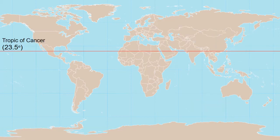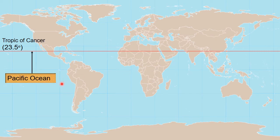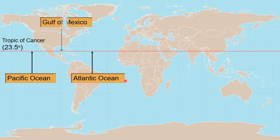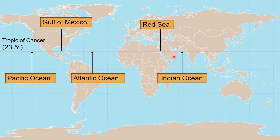Now let's look at the water bodies. The Tropic of Cancer passes through the following oceans and seas: the Pacific Ocean, the Atlantic Ocean, the Gulf of Mexico, the Red Sea near Saudi Arabia, the Indian Ocean, and the Taiwan Strait near Taiwan.